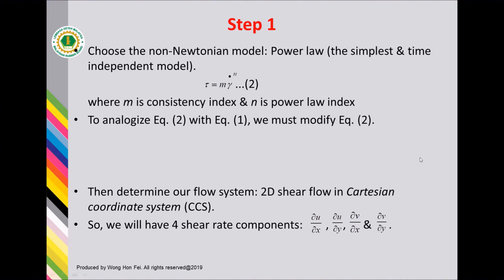Step one: choose the non-Newtonian model. In this case, I choose the power law model because it is the simplest and time-independent model, given by equation 2. To analogize equation 2 with equation 1, we must modify equation 2. This term is called the non-Newtonian viscosity model. Then, determine our flow system. I will choose two-dimensional shear flow in the Cartesian coordinate system, giving us four shear rate components: del u del x, del u del y, del v del x, and del v del y.